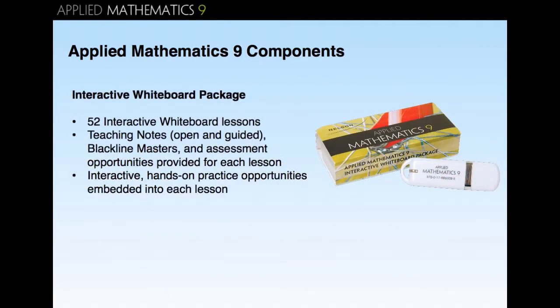The interactive whiteboard package includes ready-to-use interactive whiteboard lessons for 52 topics covered in the course. These lessons provide interactive and engaging activities that support the three-part lesson design: minds-on, action, and consolidation. Teachers have the flexibility to teach each lesson using either an open or guided approach, with built-in prompts, teaching notes, blackline masters, and assessment opportunities for and as learning to help teachers differentiate instruction and guide students to success. Interactive hands-on practice opportunities are built into each lesson to keep students engaged and to prepare students for further practice in the workbook.